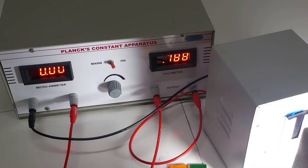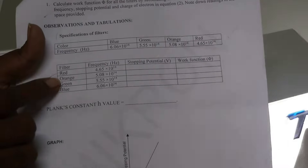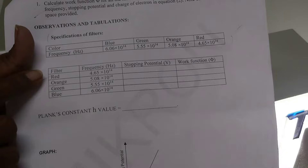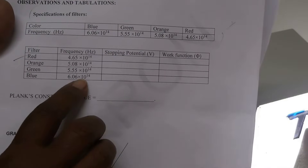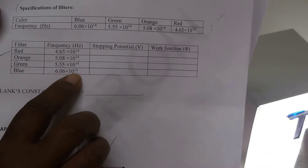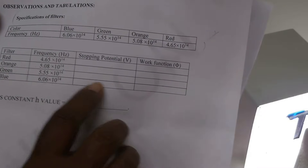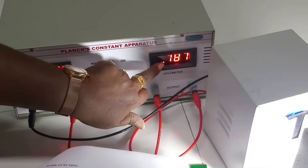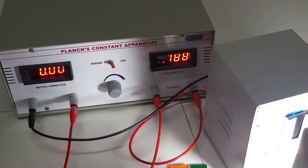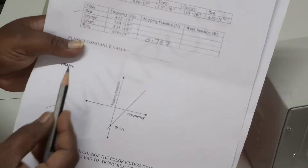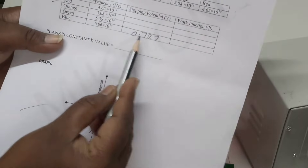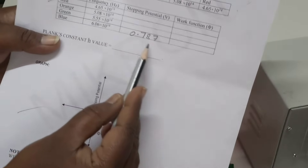In the tabular column, note down the stopping potential for the blue color. We have different filter colors — red, orange, green, blue. For the blue color, its frequency is 6.06 × 10¹⁴ Hz. In the corresponding column, note down the stopping potential: 0.787. The stopping potential for blue color is 0.787.